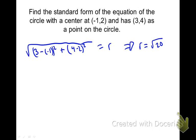In this case, the radius is going to be about the square root of 20. So now if I want to write that equation in standard form, I'm going to put the center of the circle in, x plus 1 squared plus y minus 2 squared. The center was negative 1, positive 2. And then the radius is radical 20 squared, which is just 20.